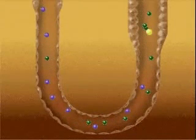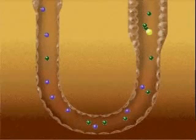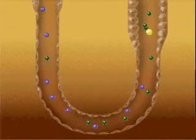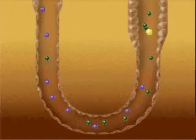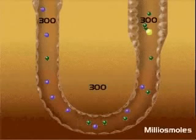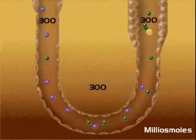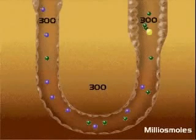To explain the countercurrent multiplication system, we must first imagine the loop filled with a stationary column of glomerular fluid, which includes water, salt, and urea. At first, the concentration of the glomerular fluid and the surrounding interstitial fluid will be equal at an osmolarity of 300 milliosmoles.